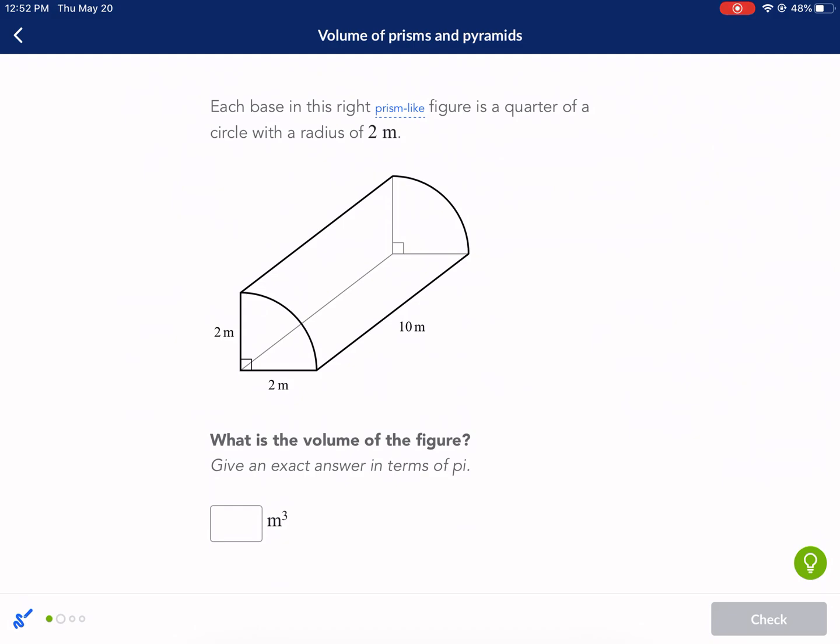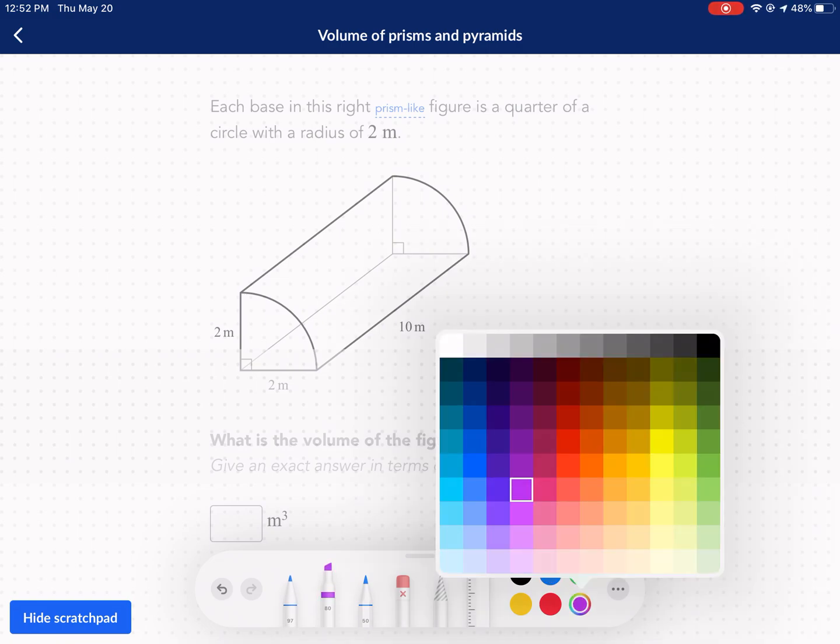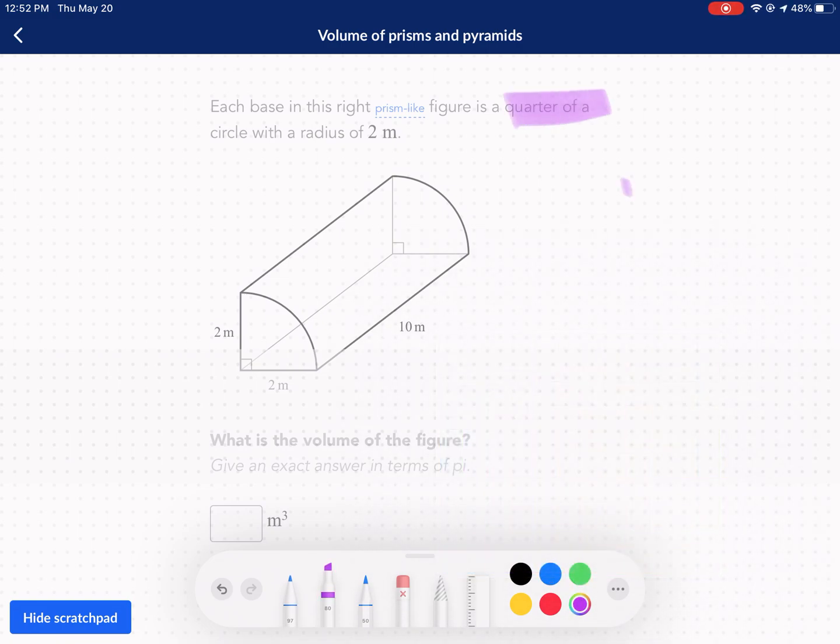Each base in this right prism-like figure is a quarter of a circle with the radius of two. What is the volume of the figure? A couple of clues here. It tells us that we're dealing with a quarter of a circle. That means we should probably calculate the whole thing, imagining if it was intact, and then just take a quarter of that volume. Let's pretend this thing is intact and we got to find the volume of this whole thing. And then we'll take one fourth of that when we're done.